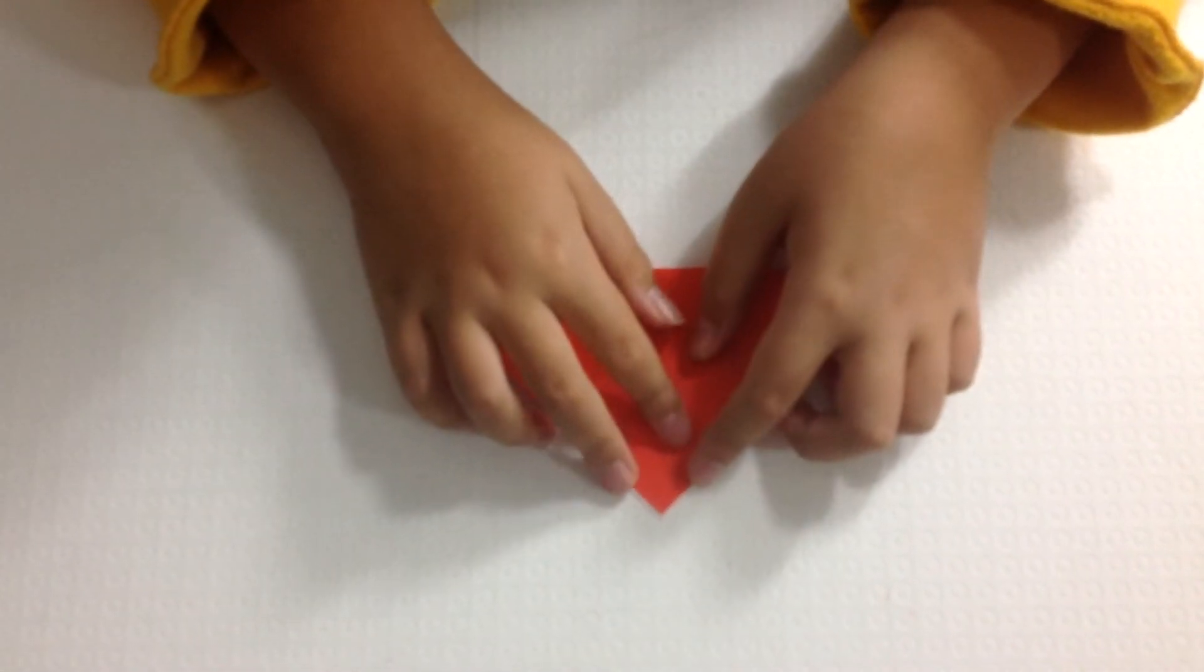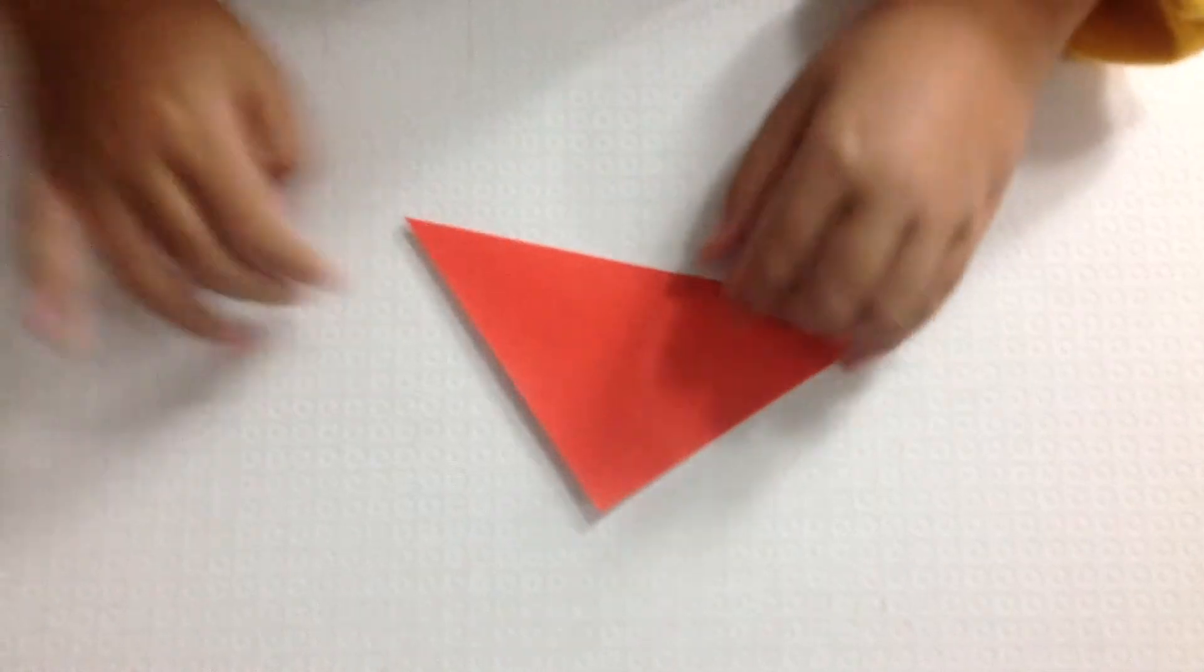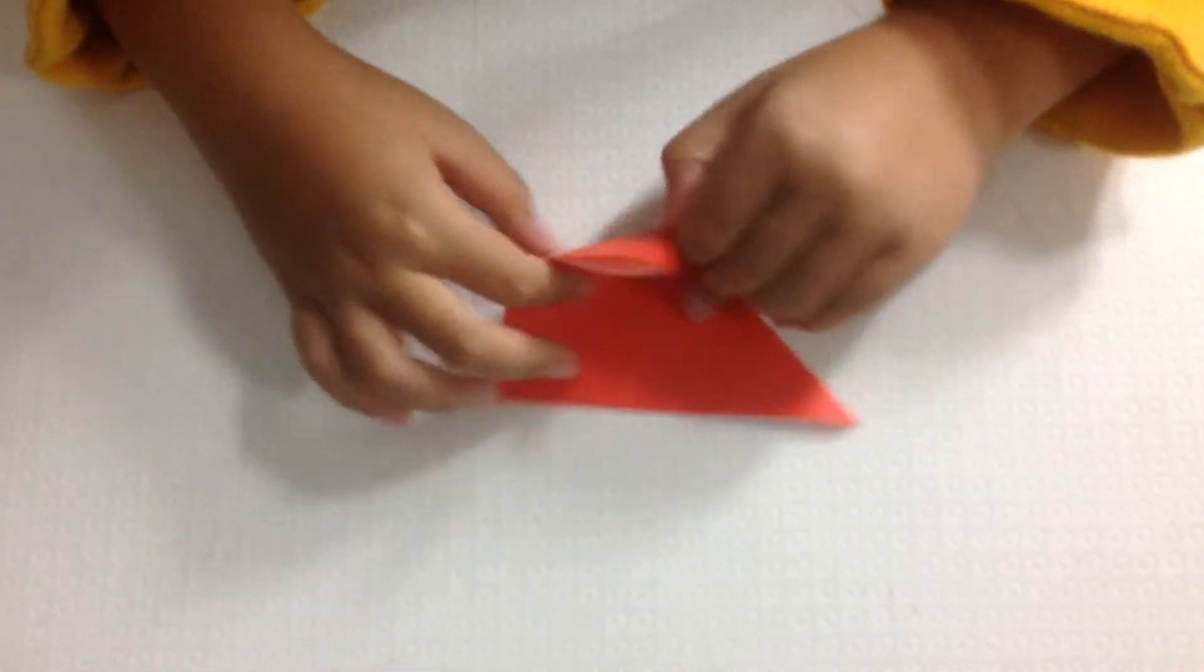First of all, fold your piece of paper in half diagonally, like so. And then fold diagonally once more.